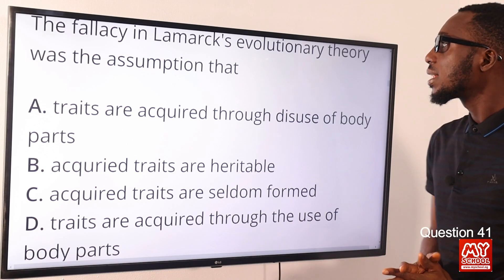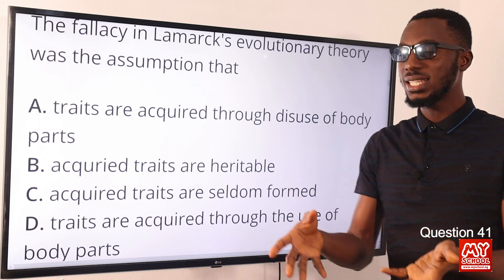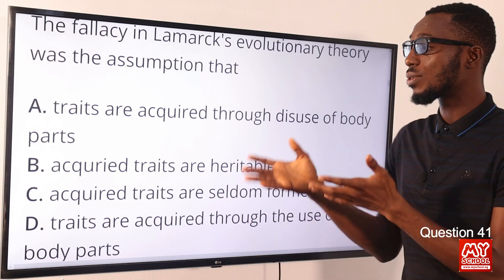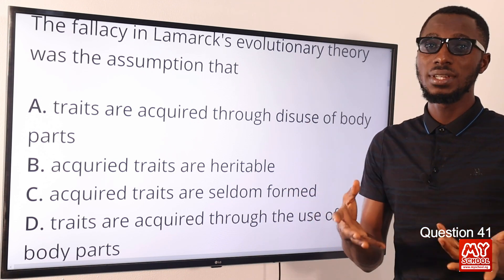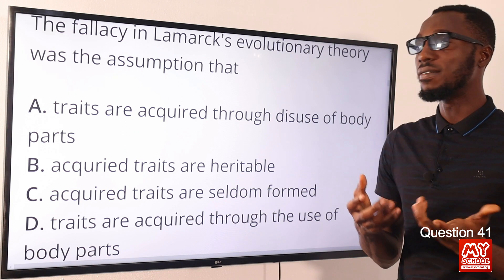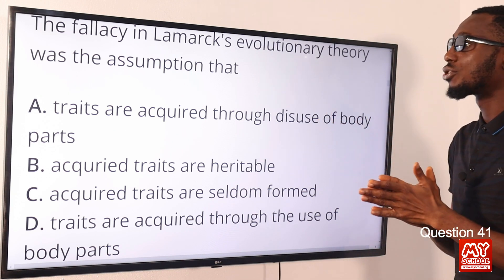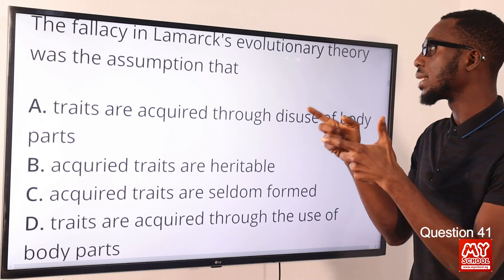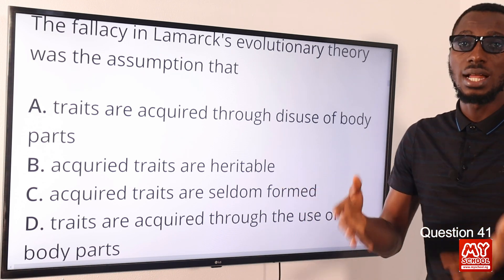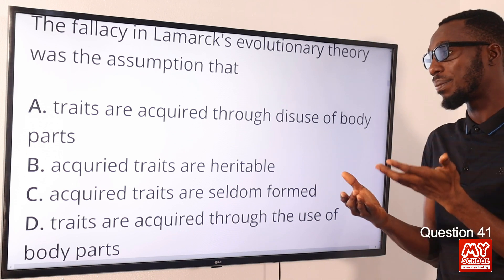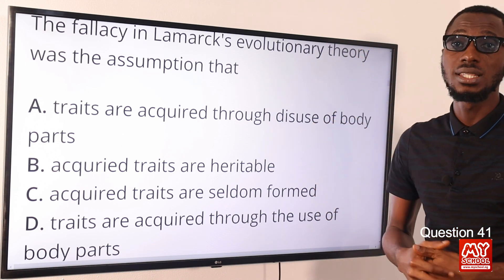Question 41. The fallacy in Lamarck's evolutionary theory was the assumption that acquired traits are heritable — that is, you can pass them to the next generation or to your offspring. A fallacy is a reasoning that reaches a conclusion without evidence to support it. Looking at Jean Lamarck's theories, you have use and disuse, and also the inheritance of acquired traits — and that is the part that is fallacy. The correct option is option B: acquired traits are heritable.